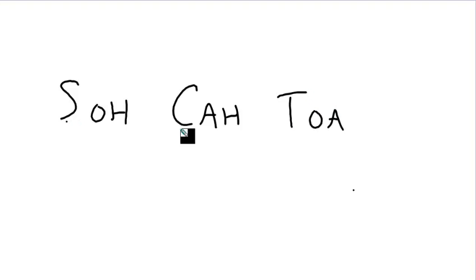So, the S, the C, and the T stand for sine, cosine, and tangent. And then the two letters that follow each one stand for, you know, either opposite over hypotenuse, adjacent over hypotenuse, or opposite over adjacent. So you can use SOH-CAH-TOA to help you remember what ratio name uses which sides.